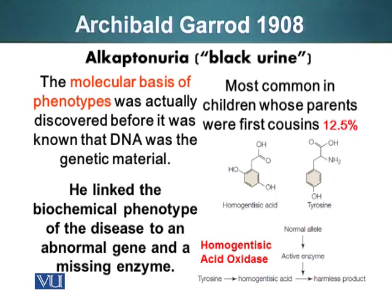He noticed that there was a prevalence of children of consanguineous marriages — marriages between two cousins or close relatives. These children had a higher rate of suffering from this particular disorder. So he collected urine samples and blood samples, and discovered that these people were missing a particular enzyme, a protein.